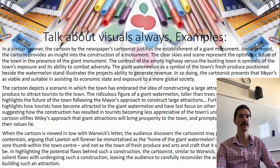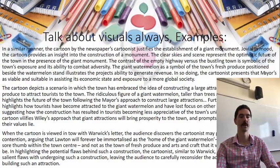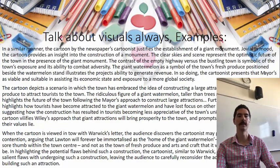The second cartoon example: 'The cartoon depicts a scenario in which the town has embraced the fear of constructing a large attraction and its quality of produce to attract tourists. The ridiculous figure of a giant watermelon taller than trees in St. Martin's Church highlights the future of the town following the mayor's approach. Furthermore, the cartoon highlights how tourists have become attracted to the giant watermelon and lost focus on other treasures of the town, suggesting construction has resulted in tourists becoming less appreciative of the town's unique qualities. Thus the cartoon vilifies Wiley's approach that giant attractions will bring prosperity, prompting readers to reflect where their values lie.' This brings in decent audience effect — the audience is made to feel, reflect, and consider their values. Key vocab: furthermore, highlights, vilifies.